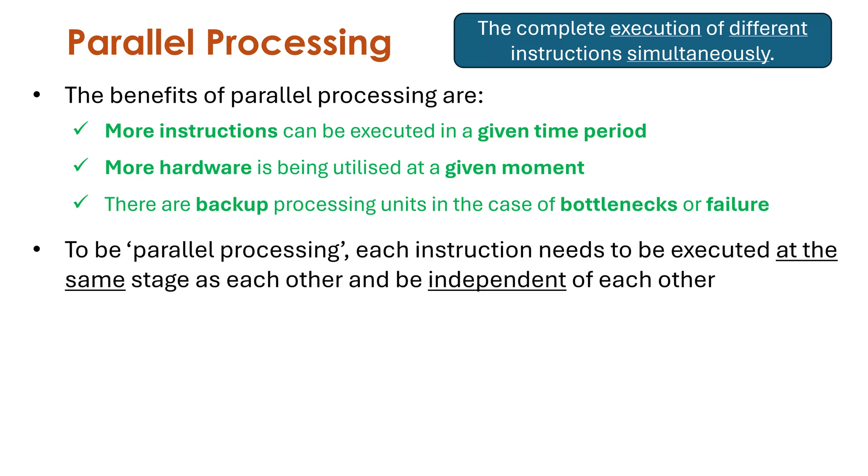Now to be a bit of a stickler, to be parallel processing technically speaking, each instruction needs to be executed at the same stage as each other and also be completely independent of each other. This essentially rules out pipelining as an example of parallel processing.